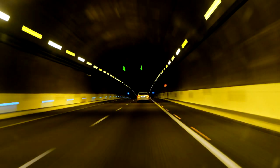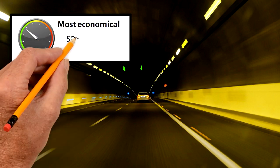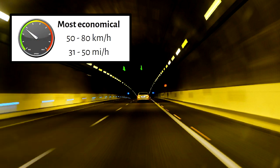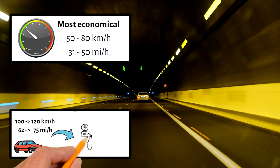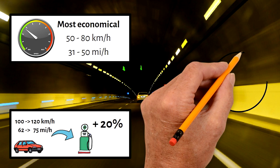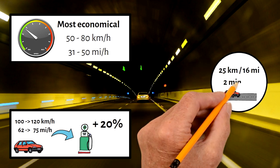The average car drives at its most economical mode between 50 and 80 km per hour. For example, if you drive 120 km per hour, you consume 20% more fuel compared to 100 km per hour. On a trip of 25 km, only 2 minutes of time would be saved anyhow.